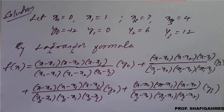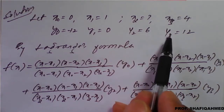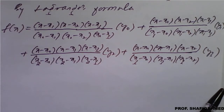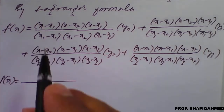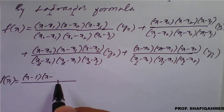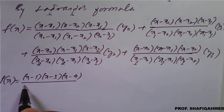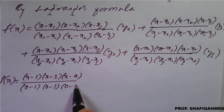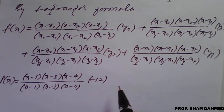We know the values of X naught, X1, X2, X3, as well as Y naught, Y1, Y2, Y3. Leaving X, all values will be substituted. The first term becomes: (X minus 1)(X minus 3)(X minus 4) divided by (0 minus 1)(0 minus 3)(0 minus 4), into Y naught which is minus 12.